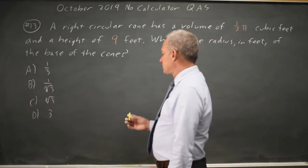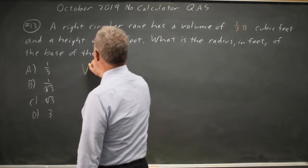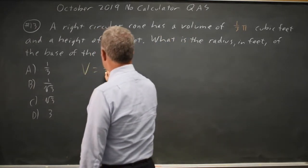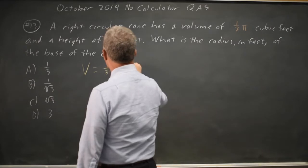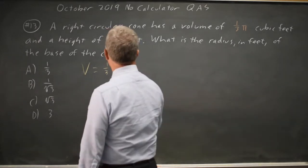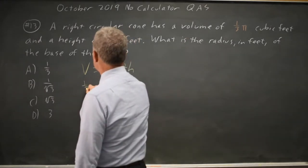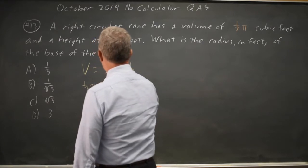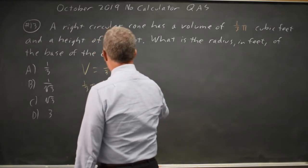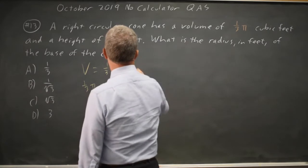We have a formula sheet at the start of the section that says the volume for a right circular cone is one-third pi r squared h. We're given the volume here is one-third pi, and that is one-third pi r squared h where h is 9.